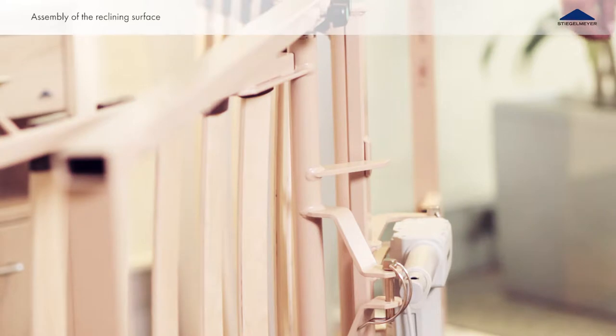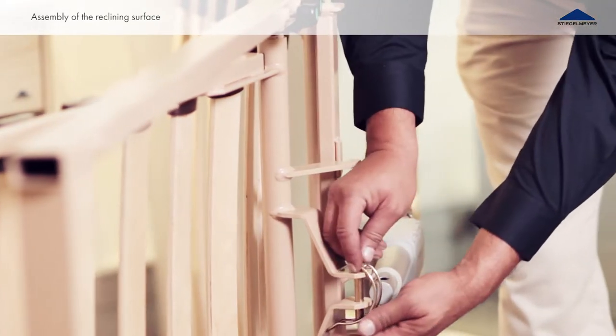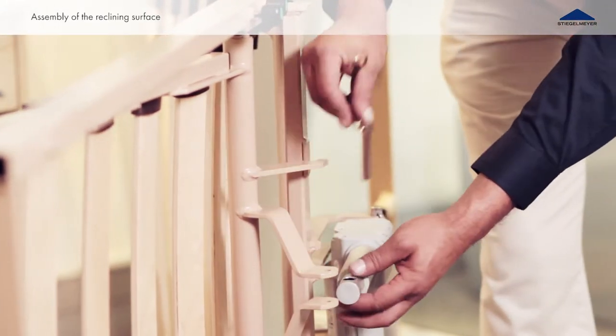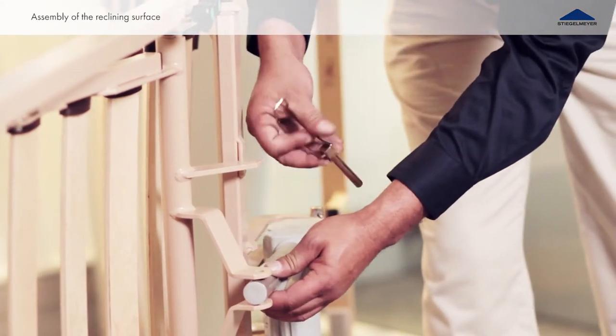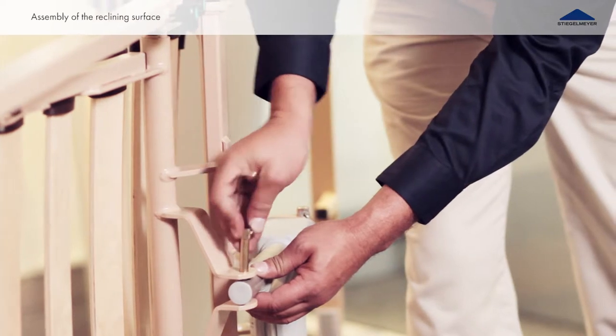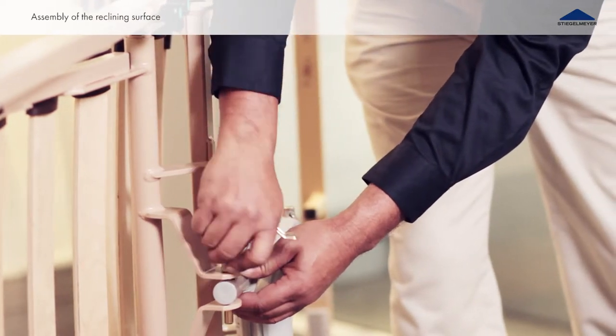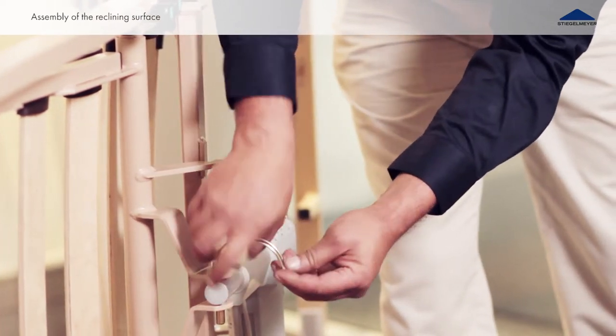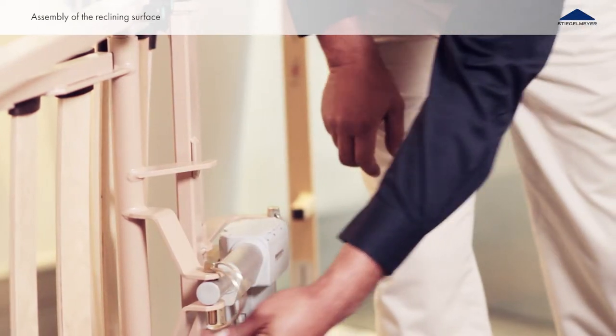Connect the lift rod of the leg rest actuator to the leg rest reclining frame. For that, insert the cotter pin through the available hole on the frame and through the lift rod. Secure it by turning over the clamping yoke for safe use of the leg rest function.